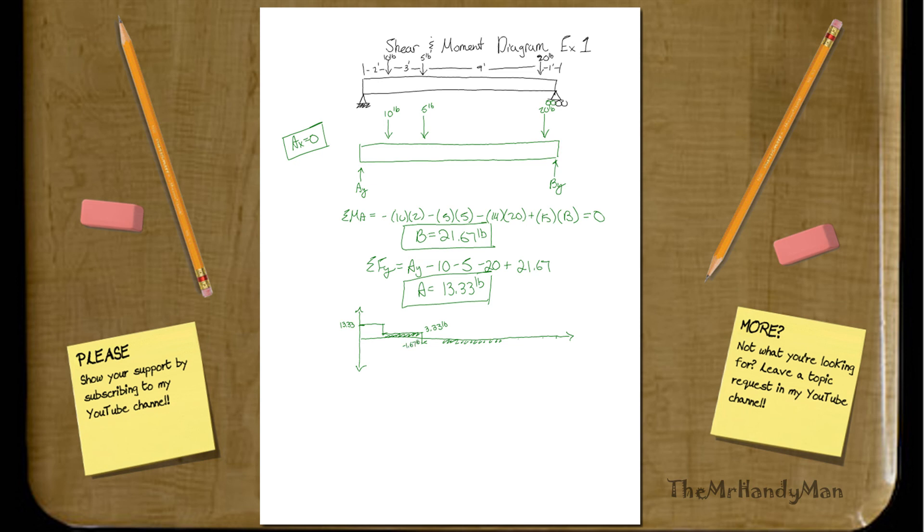Then, you continue on until you hit right where that big 20-pound force is at the last foot, and you minus 20. And you finish it off. And this is 21.67. This is all what I would consider my shear diagram.